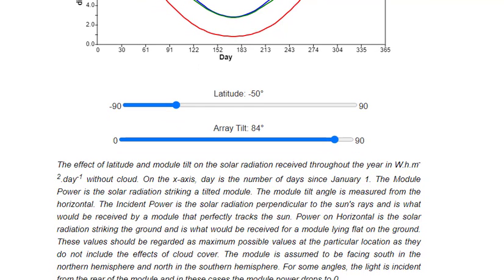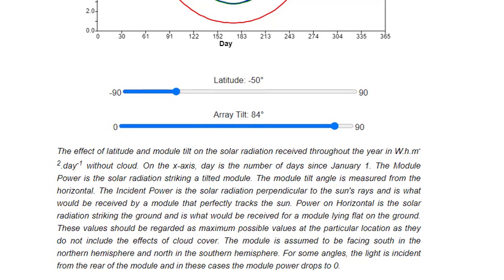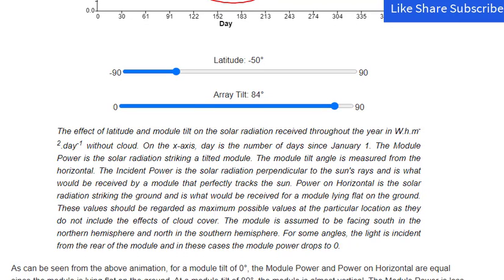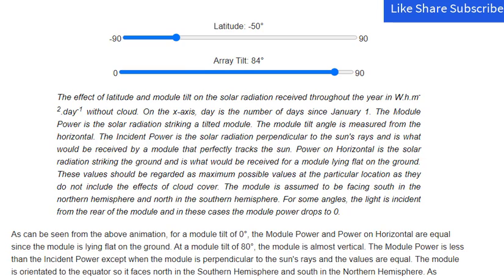These values should be regarded as maximum possible values at the particular location as they do not include the effects of cloud cover. The module is assumed to be facing south in the northern hemisphere and north in the southern hemisphere. For some angles, the light is incident from the rear of the module, and in these cases the module power drops to zero. As can be seen from the animation, for a module tilt of zero degrees, the module power and power on horizontal are equal since the module is lying flat on the ground. At a module tilt of 80 degrees, the module is almost vertical. The module power is less than the incident power except when the module is perpendicular to the sun's rays. As the module moves from the northern to southern hemisphere at latitude equals zero degrees, the module is turned to face in the opposite direction and so the module power curve flips. Try setting the latitude to your location and then varying the module tilt to see the effect on the amount of power received throughout the year.